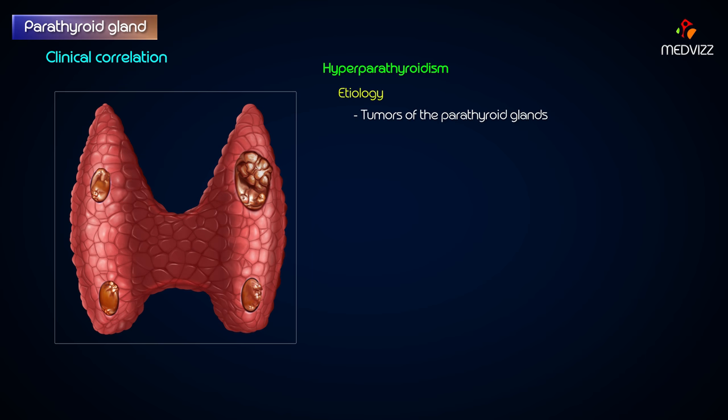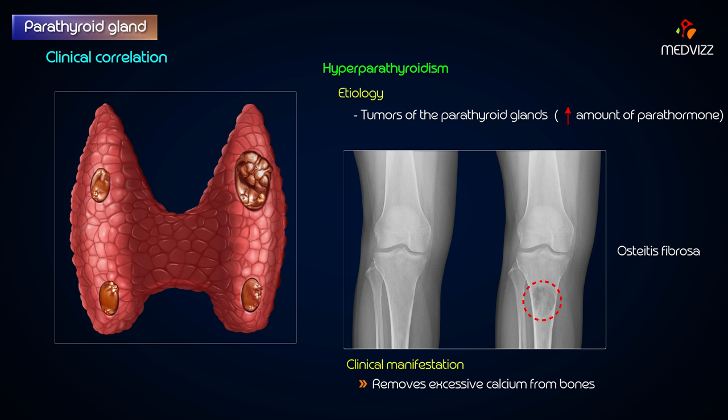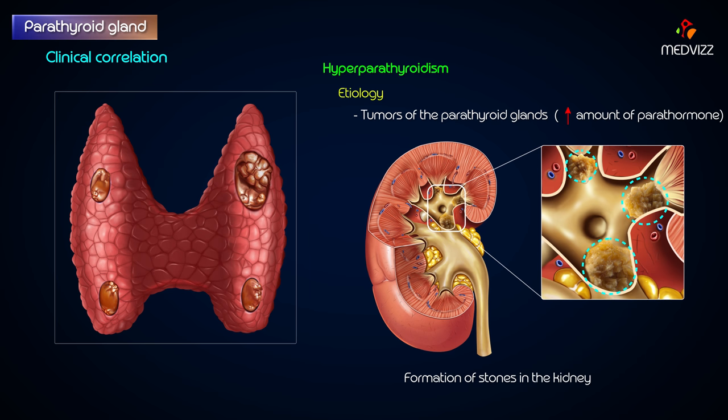Hyperparathyroidism is seen in tumors of the parathyroid glands. The increased amount of parathormone removes excess calcium from bones, making the bone soft due to decalcification, leading to a clinical condition called generalized osteitis fibrosa, and may also cause formation of stones in the kidney.